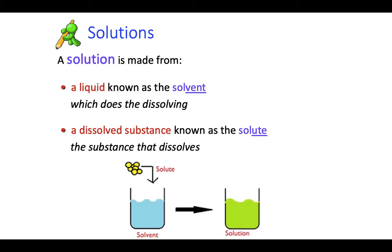Now a solution is made from a liquid known as a solvent and the solvent does the dissolving. The dissolved substance is also known as the solute and this is a substance that dissolves. So we can make a solution by dissolving a solute in a solvent. Your solvent is the liquid and your solute is what you are dissolving.